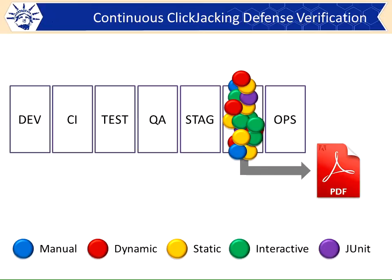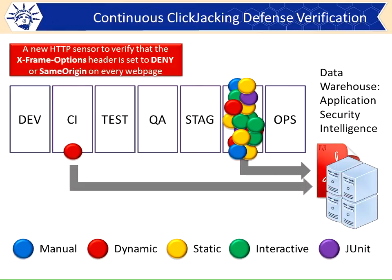If we achieve this in an organization — a lot of organizations have the security group buried under the pile doing all the tests: manual tests, dynamic scans, static stuff, interactive stuff — but on a periodic basis. They generate a PDF file once a year or once every three years. That's not working anymore. I want continuous, real-time monitoring. So we deploy one sensor, move it into a CI or test environment, and we've got a new HTTP sensor that verifies X-Frame-Options is set to deny or same-origin on every web page. The data that comes out should be collected in some kind of data warehouse where we can build a real-time picture of our application portfolio for clickjacking.